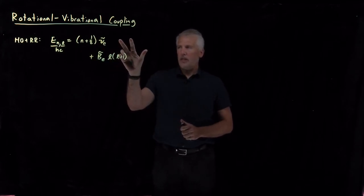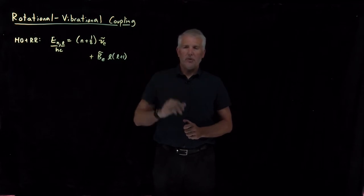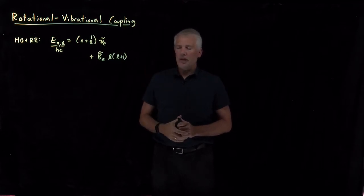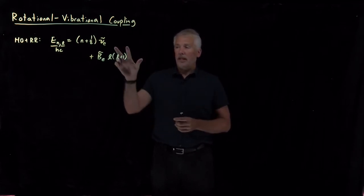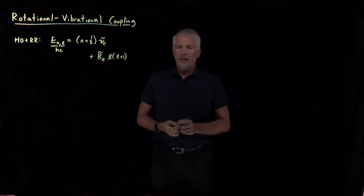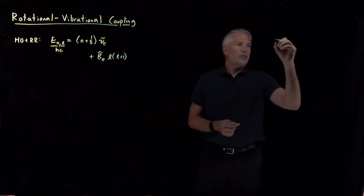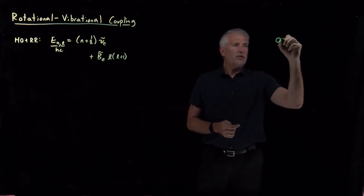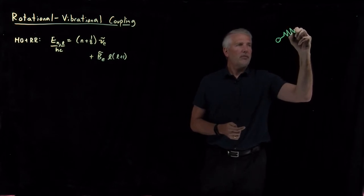We could add corrections for the anharmonicity and corrections for the centrifugal distortion — a combination of an anharmonic oscillator and a centrifugally distorted rotor. But even that combination is still missing something, as we can see if we remind ourselves of what these models are telling us about the basics of the motions of these molecules.